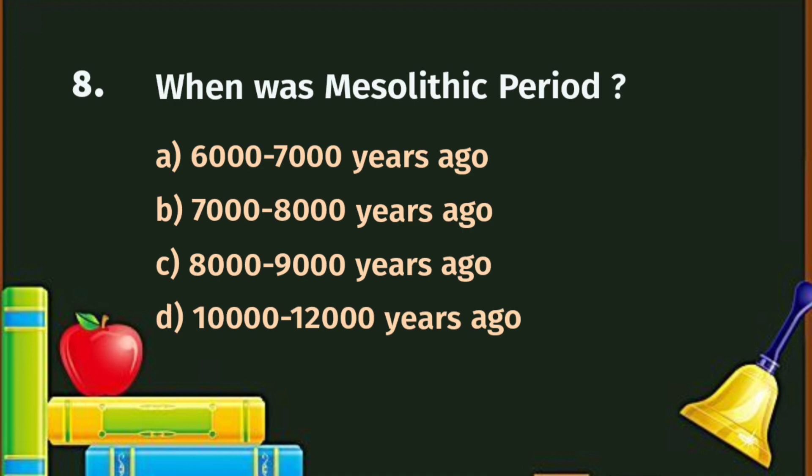Question number 8. When was the Mesolithic period? A. Six thousand to seven thousand years ago, B. Seven thousand to eight thousand years ago, C. Eight thousand to nine thousand years ago, D. Ten thousand to twelve thousand years ago. The correct answer is D - ten thousand to twelve thousand years ago.